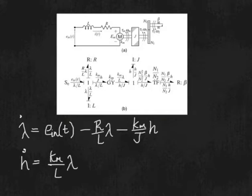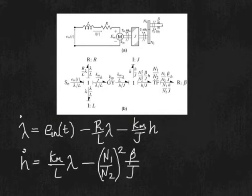And we will subtract N1 over N2 squared times beta over J times H because the power is out of the junction.